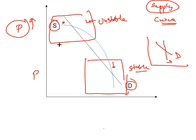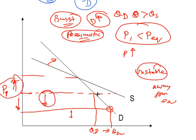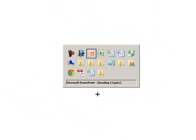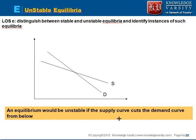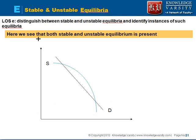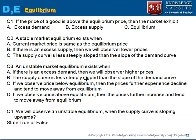To summarize: whenever the supply is cutting from below, it's unstable. This is the key rule regarding stability of equilibrium. Now consider a practice question: if the price of a good is above the equilibrium price, we should have excess supply, since demand is lesser.